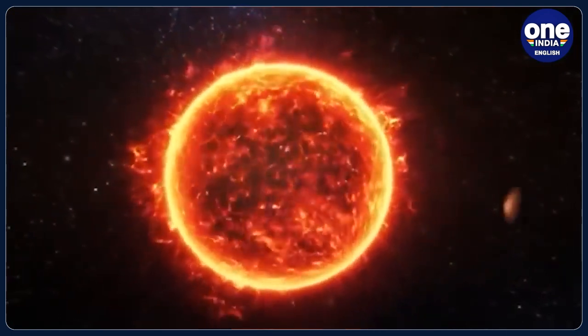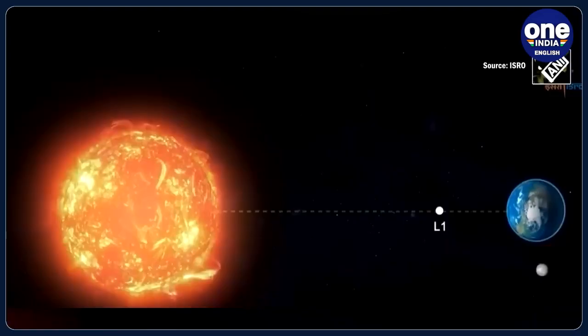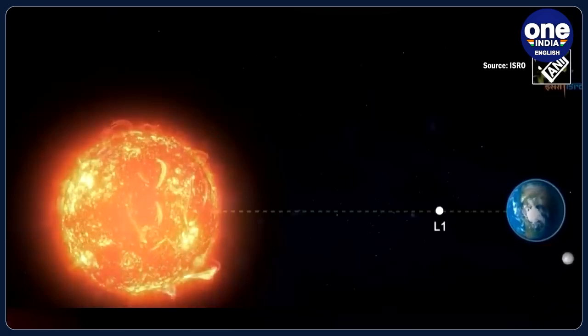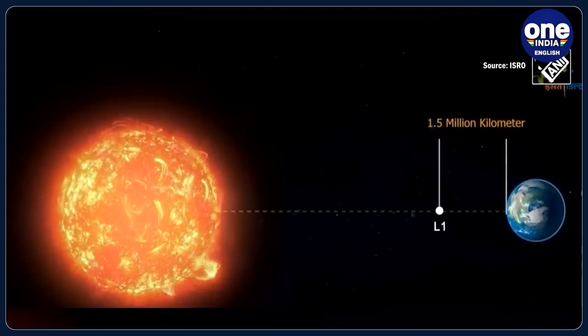The Aditya L1 mission aims to deepen our understanding of solar eruptive events and their impact on space weather. The spacecraft will be placed in a halo orbit around the Lagrange point L1, approximately 1.5 million kilometers from Earth in the direction of the Sun.